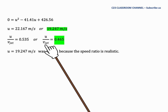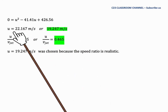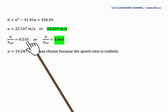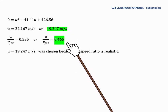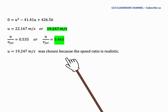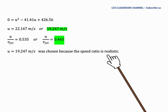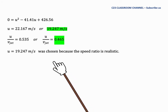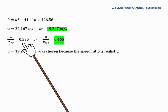We need to choose one of these two values of U by checking the speed ratio. If U is 22.167 meters per second, the speed ratio is 0.535. If U is 19.247 meters per second, the speed ratio is 0.465. We choose U equal to 19.247 meters per second because the speed ratio of 0.465 is realistic. As discussed in a previous lesson, the realistic range of speed ratio is approximately 0.46 to 0.49, so a speed ratio above 0.5 is unrealistic.